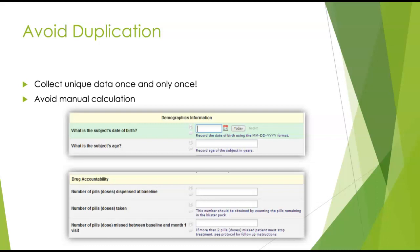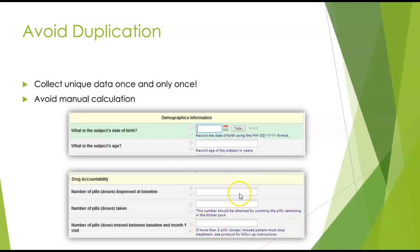Avoid duplication. Collect your unique data once and only once, and don't ask the sites to do manual calculations. Here are examples of the bad way to do it: we collected the patient's date of birth and then we're asking the site staff to state their age — we don't need to do that. We can collect the date of birth once and use a program to calculate age. Similarly, we ask for the number of pills dispensed and the number taken, then ask the study coordinator to calculate the difference. In reality, it makes more sense to collect those two data points and have a program calculate the difference.